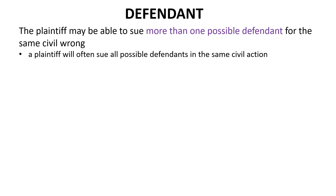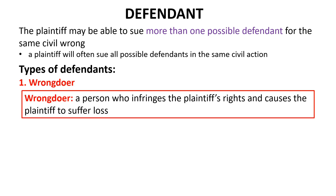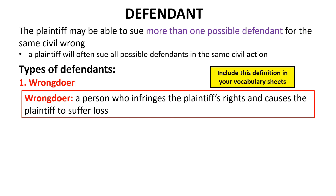There are three main different types of defendants. The first is the wrongdoer. The wrongdoer is the person who infringes the plaintiff's rights and causes the plaintiff to suffer loss. Find the term 'wrongdoer' in your vocabulary sheets and write this definition in there.